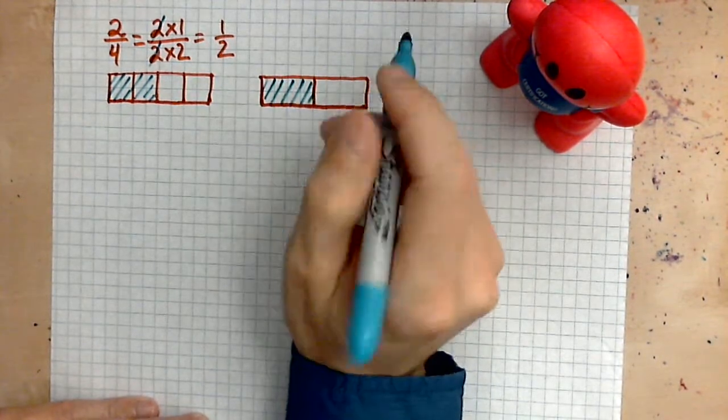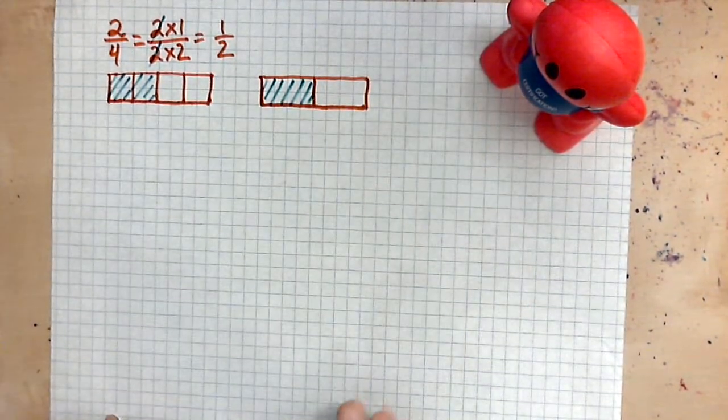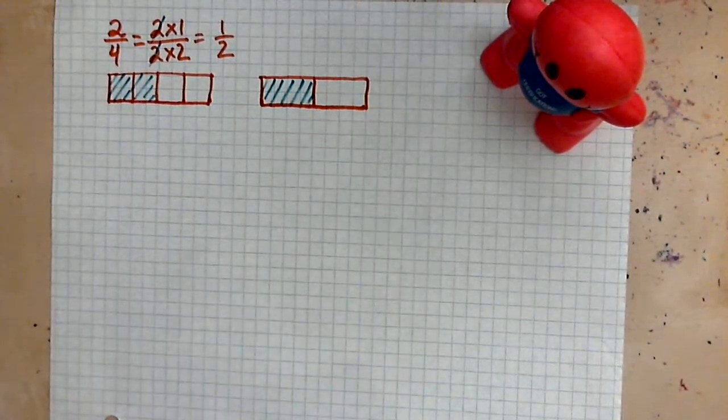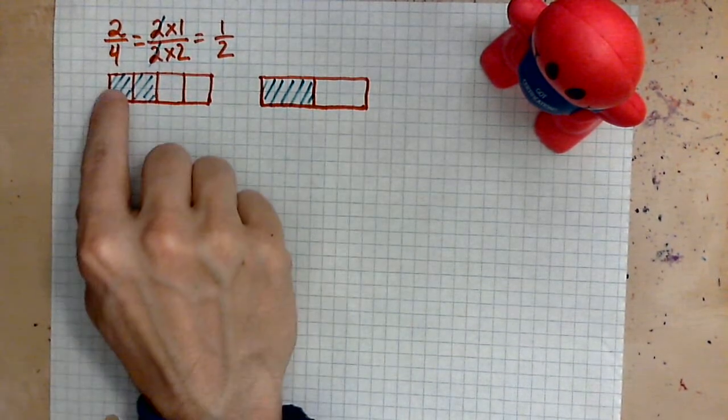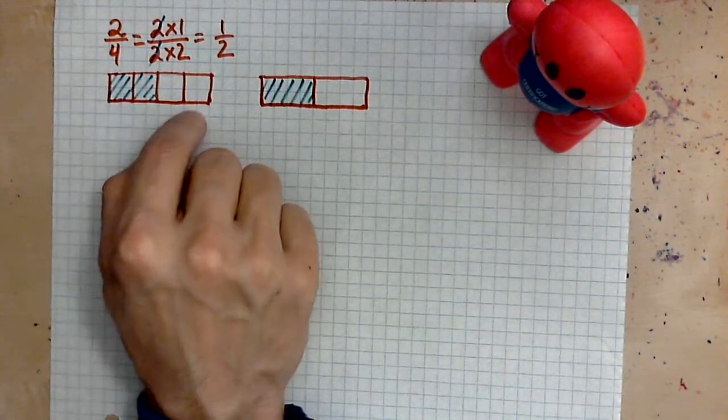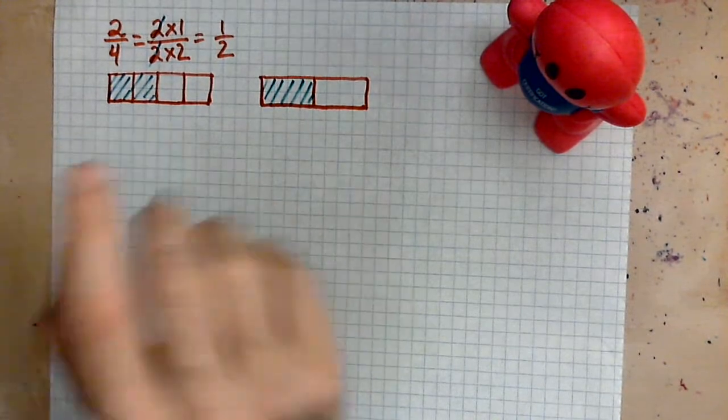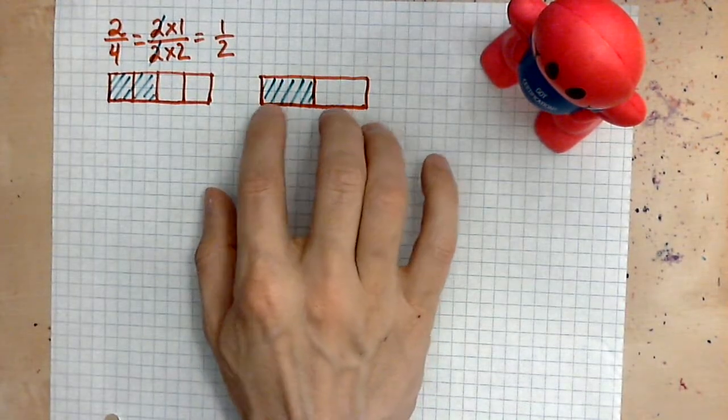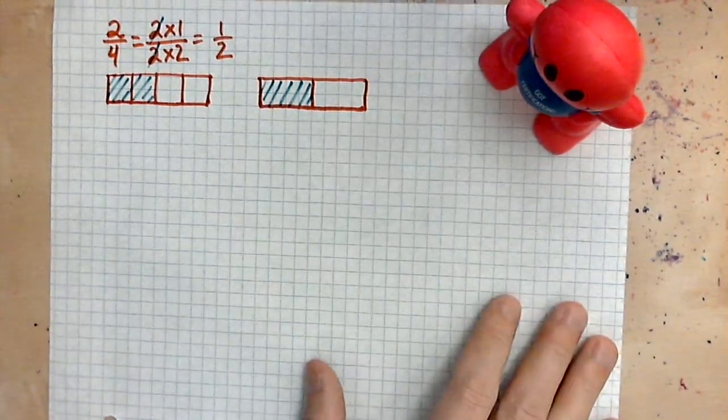That's what it means to reduce a fraction in terms of a picture. Instead of dividing this into 4 equal pieces and taking 2 of those pieces, we are dividing this into 2 pieces and taking only 1 of those pieces.